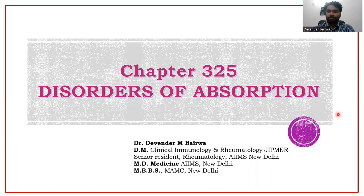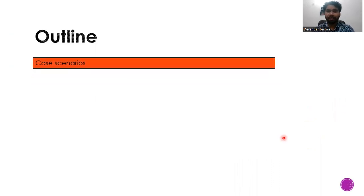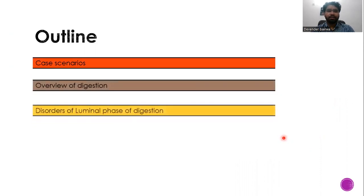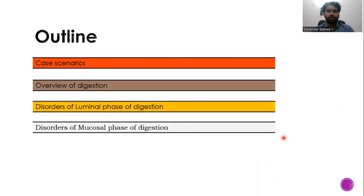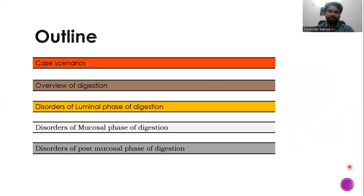We will be discussing this presentation under the following headings. First we will discuss case scenarios, then an overview of digestion, then disorders of luminal phase digestion, disorders of mucosal phase digestion, and disorders of post-mucosal phase digestion. It should be clear here that digestion has three phases: luminal phase, mucosal phase, and post-mucosal phase. Similarly, we can divide the diseases into these three categories.